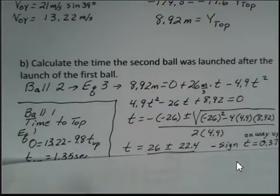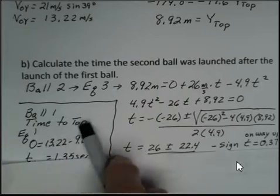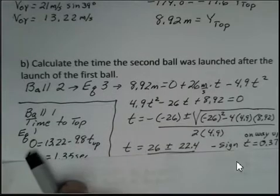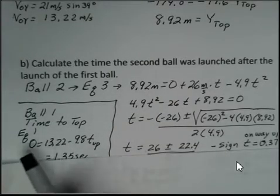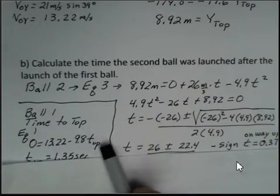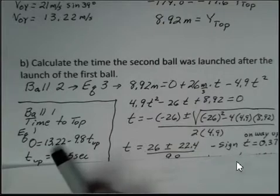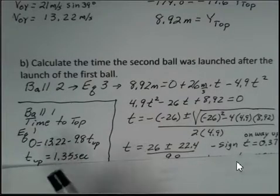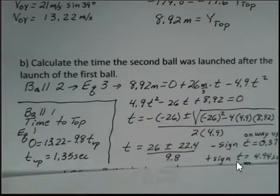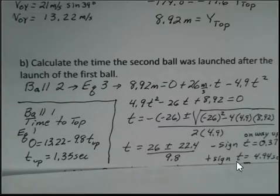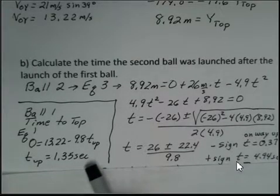What about ball number one? What's its time to the maximum height? Well, if I use the first kinematic equation, V equals V0 plus AT, the acceleration is minus 9.8. We know from the components that the vertical Y velocity is 13.22. So we can calculate 1.35 seconds. That's how long it takes ball number one to get to the collision point, to get to the highest point.